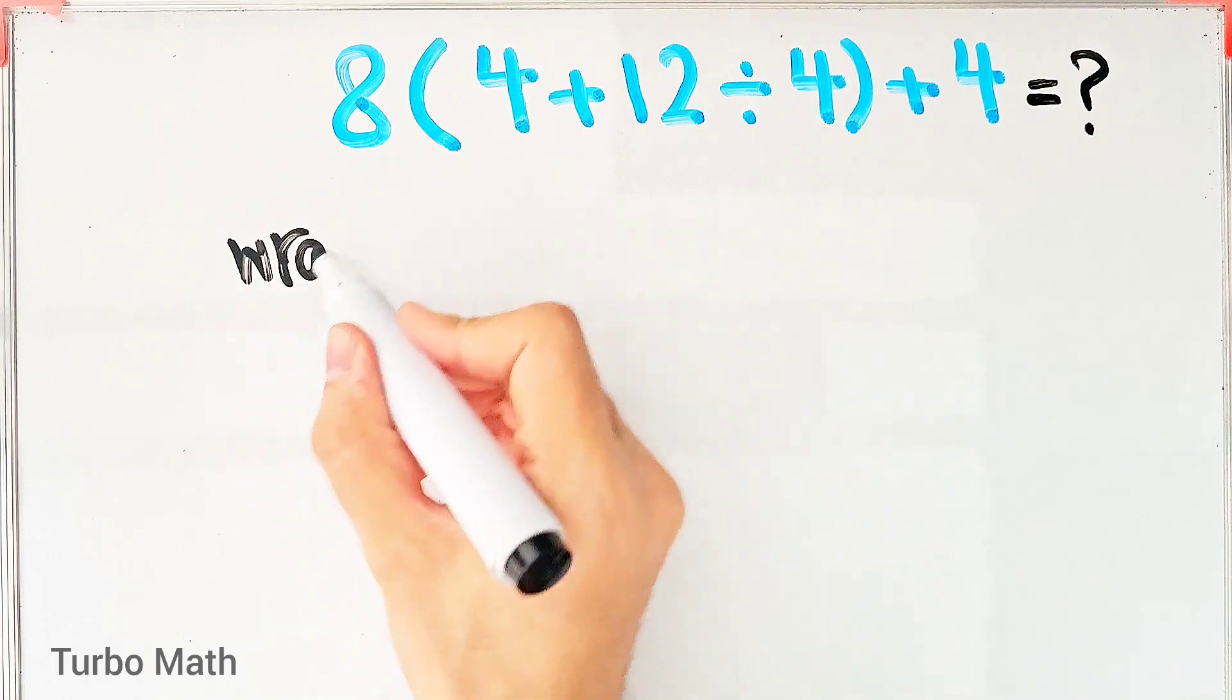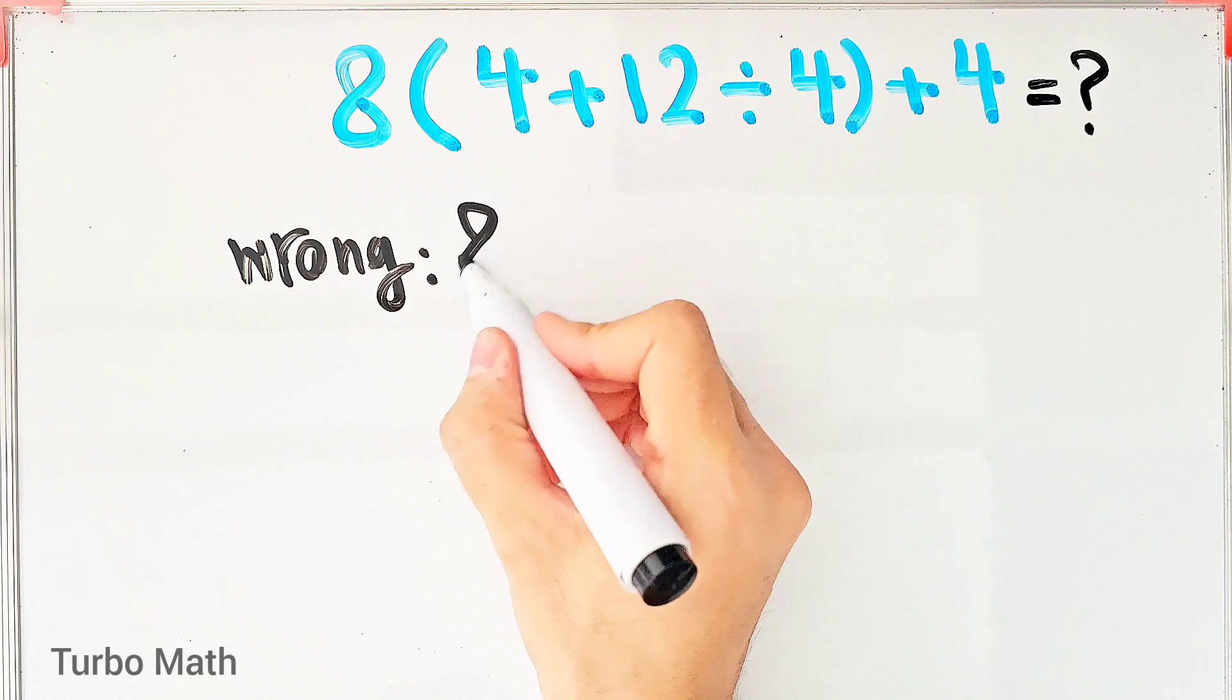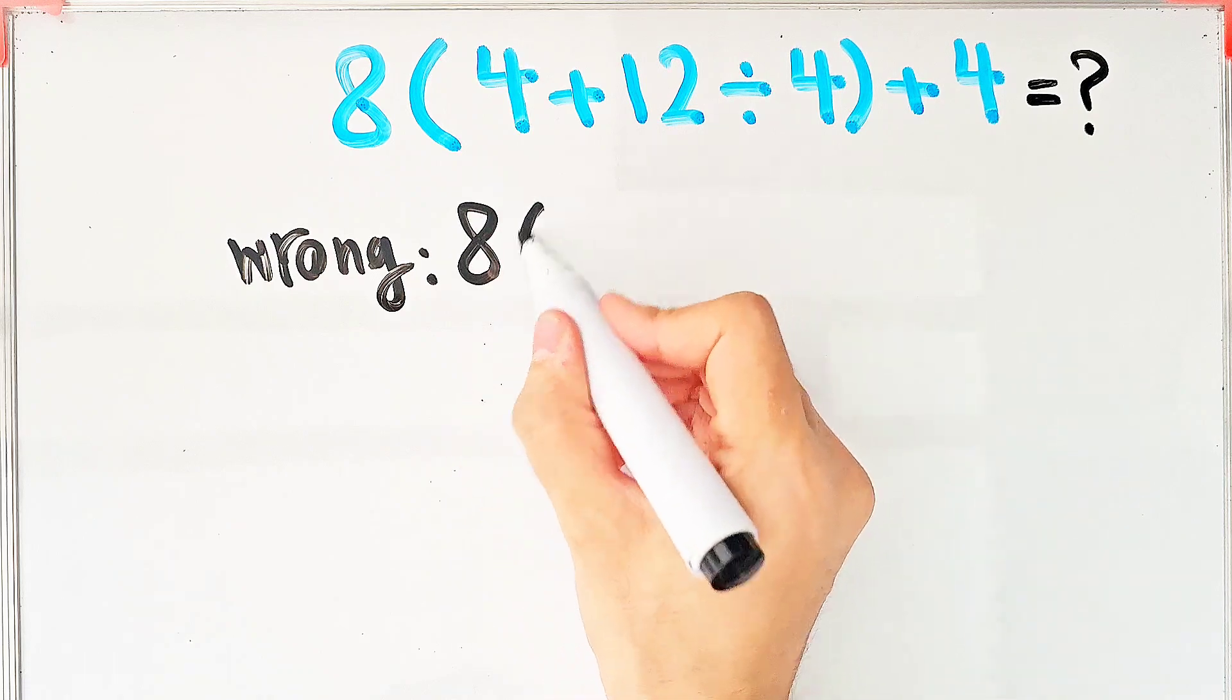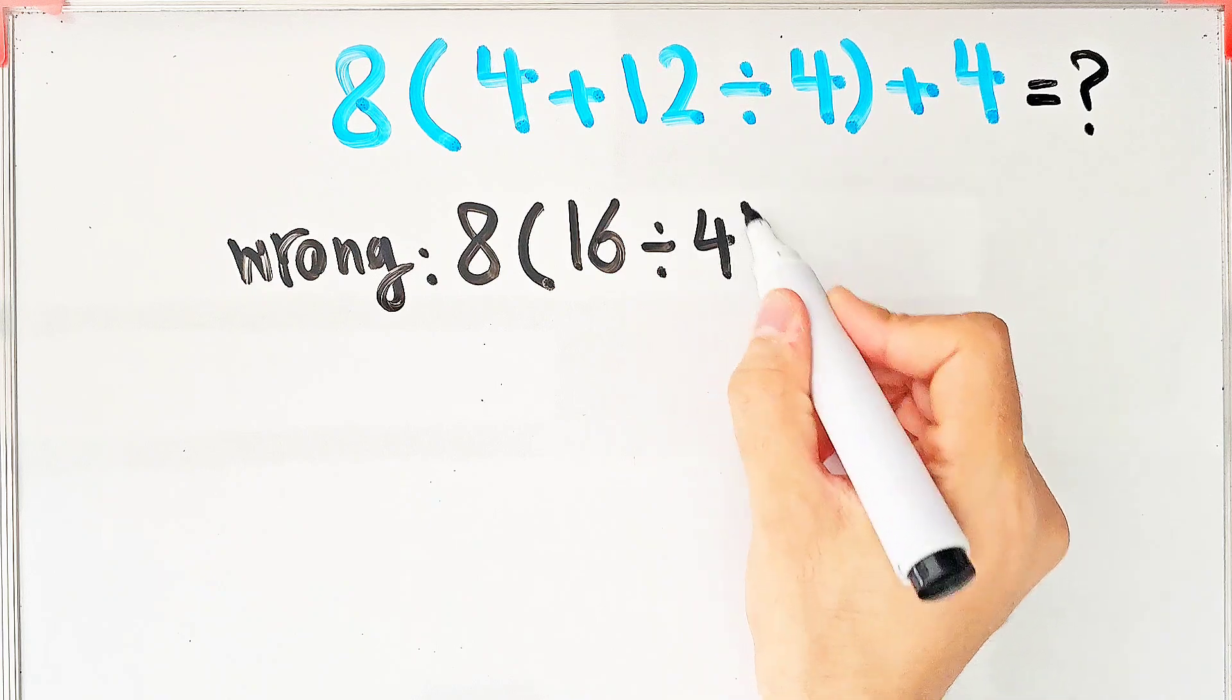In the wrong way of solving this question, some people solve this question like this: eight times four plus twelve, that equals sixteen, then divided by four, then plus four.